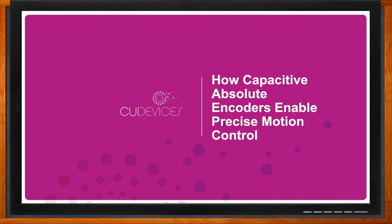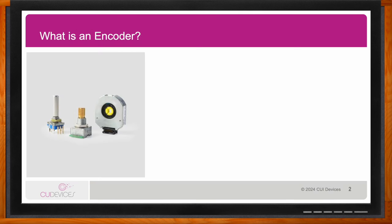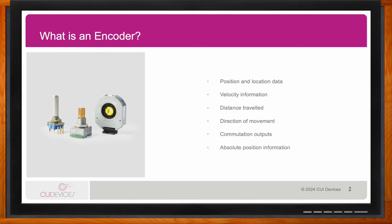Hi Jeff, thank you so much for joining me. So we're talking about how to enable motion control with capacitive absolute encoders, but before we get started, what is an encoder? An encoder is an electromechanical component meant to capture rotational motion and provide information for the overall system as a feedback mechanism. The feedback you get from the encoder can include position and location data, velocity information — which you can also translate to distance traveled — direction of movement, commutation outputs, and absolute position information. All useful inputs for automation, robotics, or any type of motion control where you need precise control of that motor and where it is positioned.